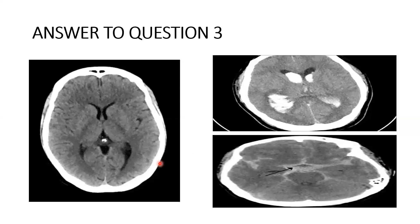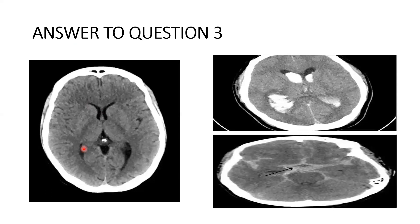Here is a CT scan in the axial view. These structures are the lateral ventricles — this is the anterior horn of the lateral ventricle. This is the third ventricle, this is the fourth ventricle, and this hyperdense structure here is the choroid plexus, which produces CSF. This hyperdense structure here is the posterior horn of the lateral ventricle. CSF moves from the lateral ventricles to the third ventricle via the foramen of Monroe.